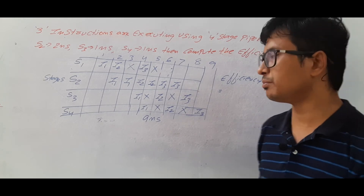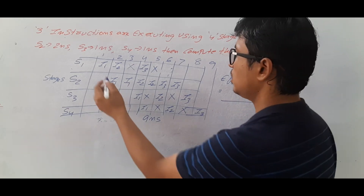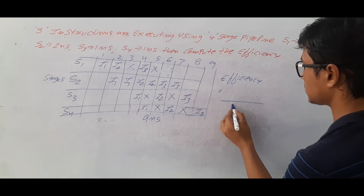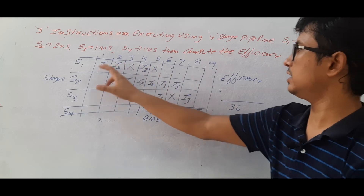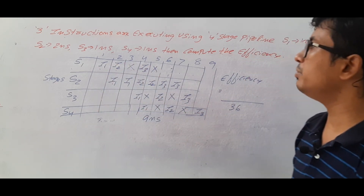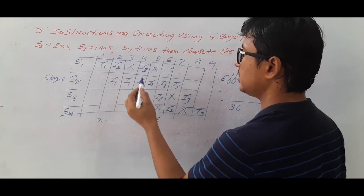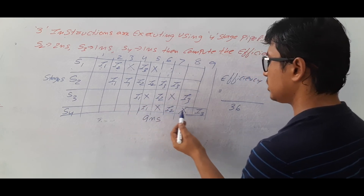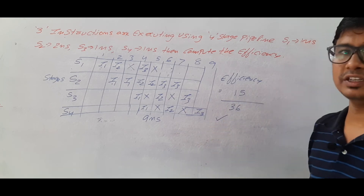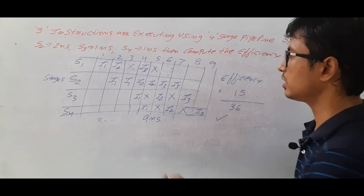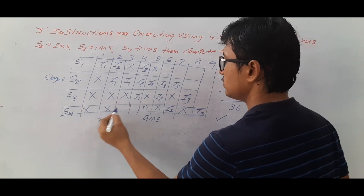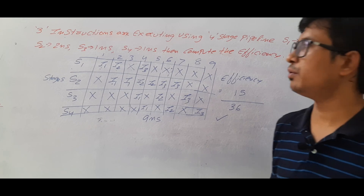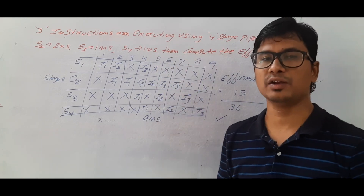Efficiency equals number of cycles utilized divided by total number of cycles. Total cycles: nine clock cycles across four stages = 9 × 4 = 36. Utilized cycles: counting the active slots gives 15. So efficiency = 15/36. The remaining cycles are all stall cycles.